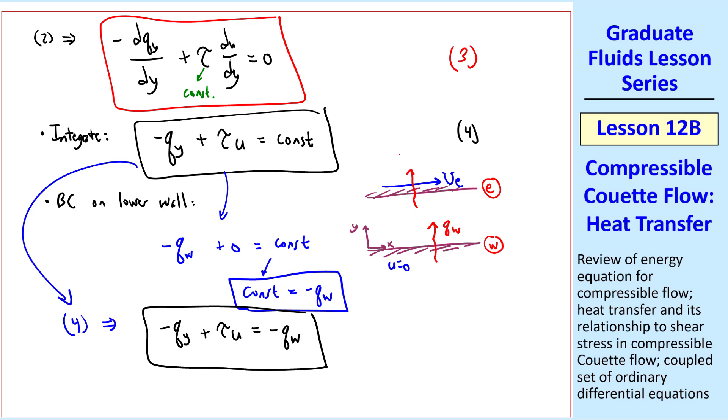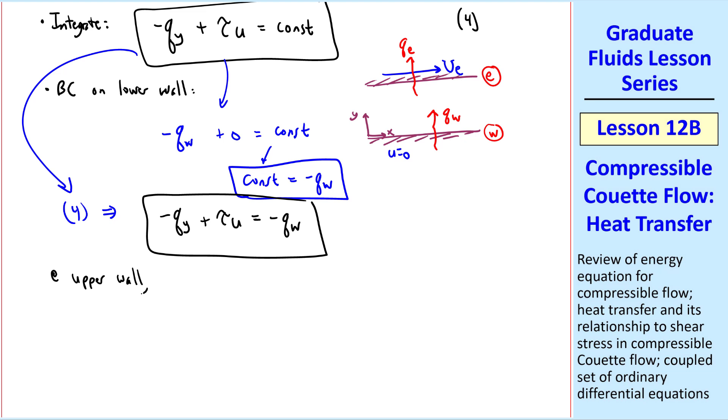Similarly, at the upper wall, we'll let the heat transfer be qe. So at the upper wall then, we have negative qe plus tau capital ue, since u is equal to ue up there, equal negative qw. Or rearranging, tau ue equal qe minus qw. I'll call this equation 5.